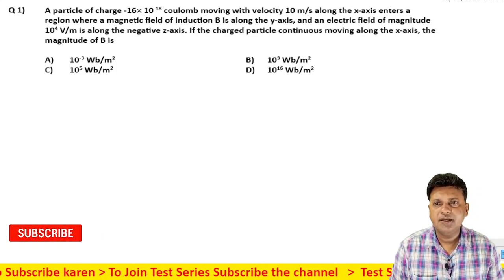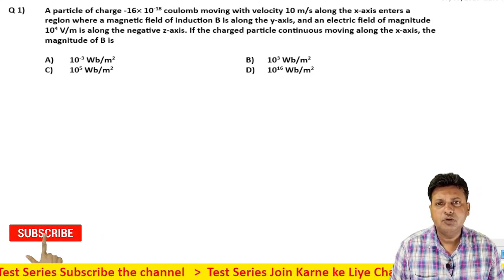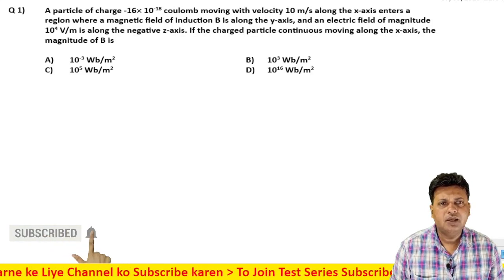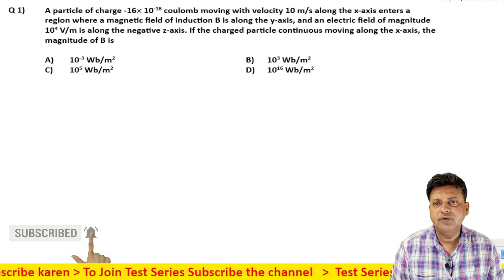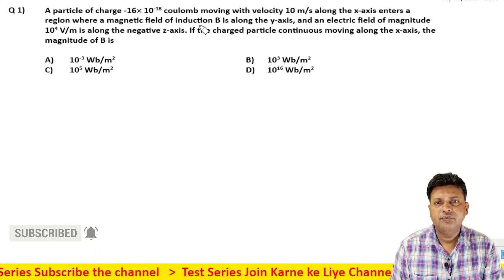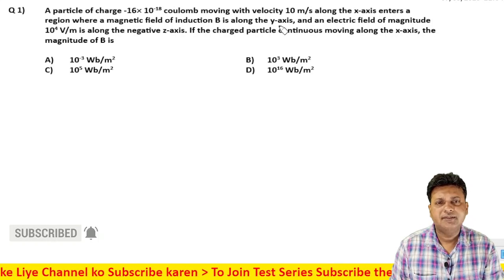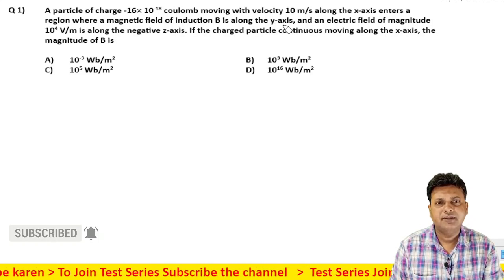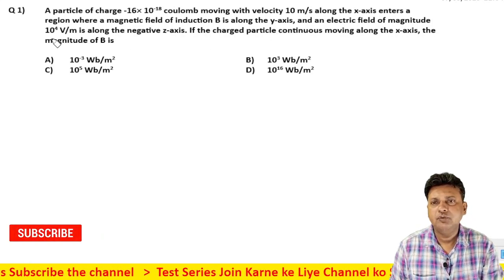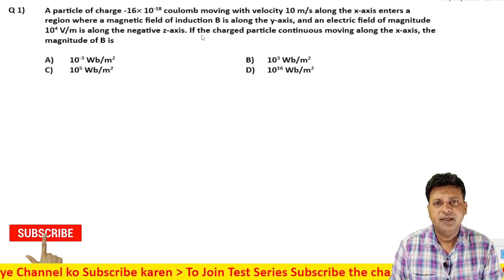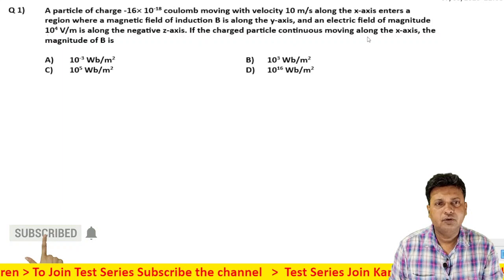The next question: a particle of charge -16×10^-18 coulomb moving with velocity 10 meter per second along the x-axis enters a region where magnetic field of induction B is along the y-axis direction, and an electric field of magnitude 10^4 volt per meter is along the negative z-axis. The charged particle continues to move along the x-axis.